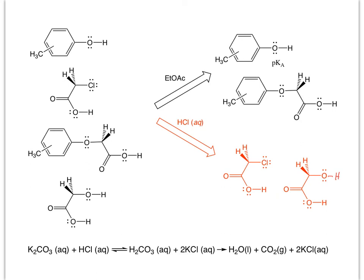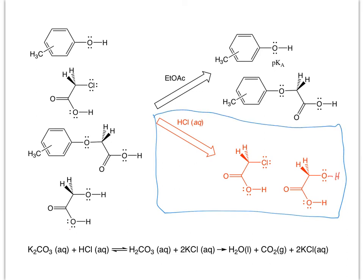Now we're going to do a second extraction with potassium carbonate. If you add potassium carbonate directly to the acid layer it will decompose, producing carbon dioxide and water as gas — so we're not going to add it to the aqueous layer. Instead, we'll add an aqueous solution of potassium carbonate to the organic layer. We'll drain the aqueous layer out of the separatory funnel and then work with the ethyl acetate layer in the next step.